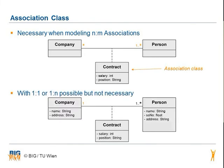When there is a relationship, the association class 'contract' with the private attributes salary and position is needed. When there is only a one-to-one or one-to-many association, the association class is not needed because you can add the attributes of the association class to another class in the relationship. Since a person can have only one relationship to a company, the attributes salary and position can be transferred to the class person, making the class contract unnecessary. The transfer is to class person because person has a multiplicity greater than one.